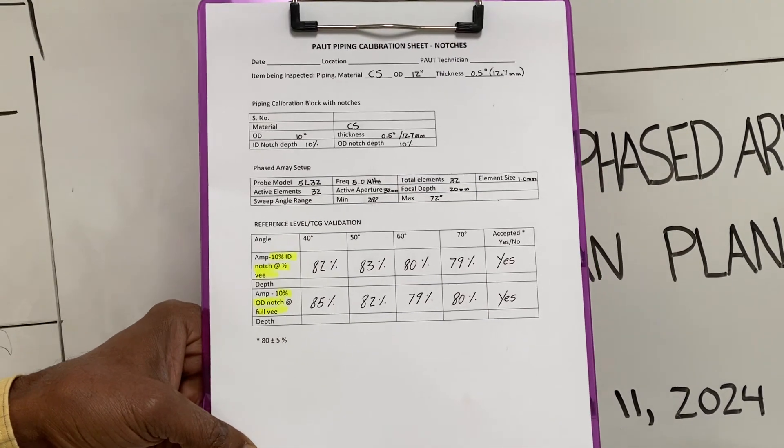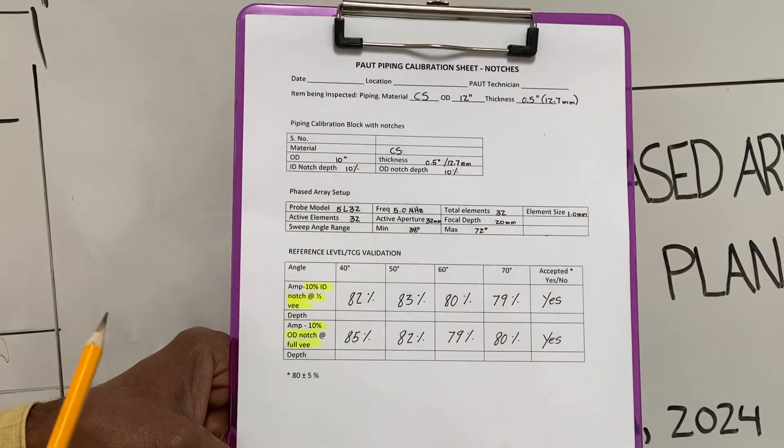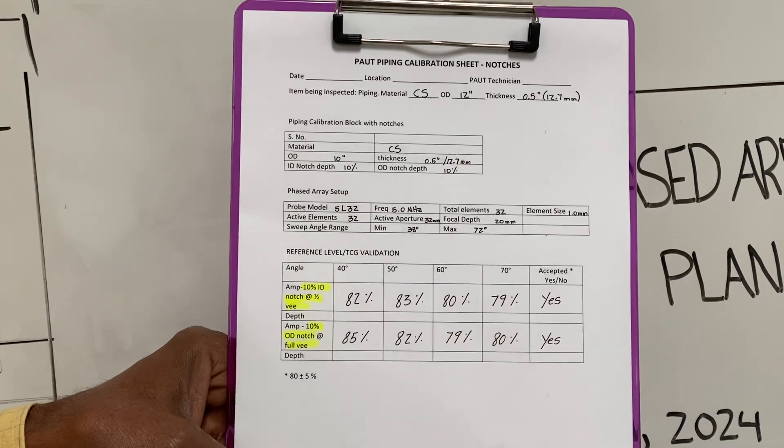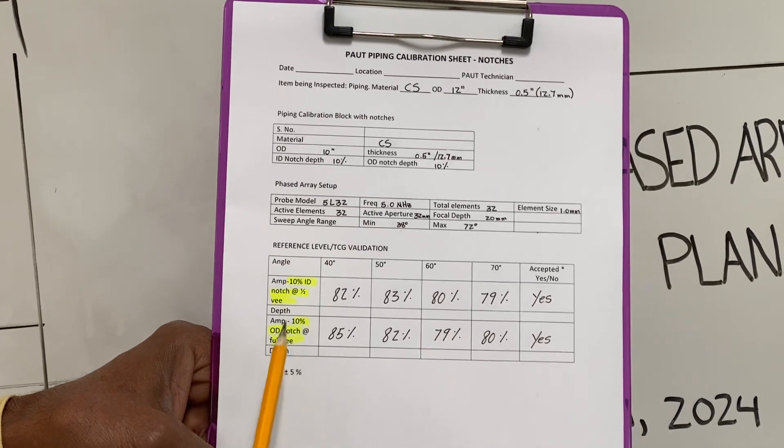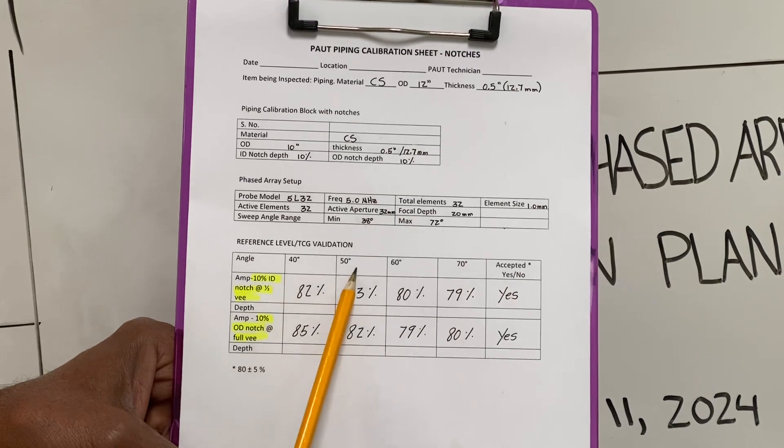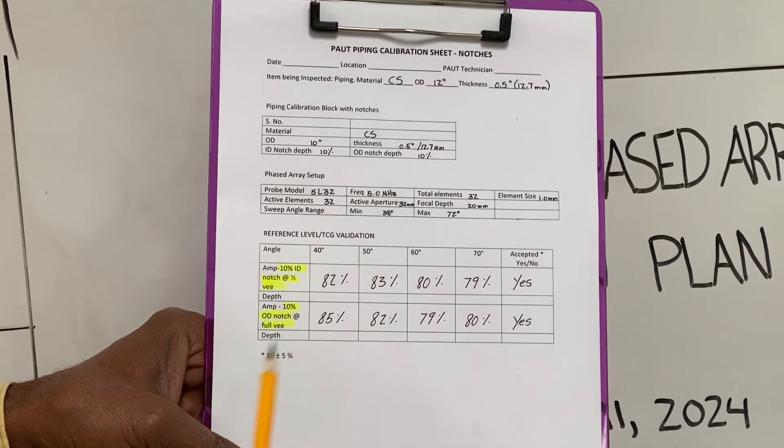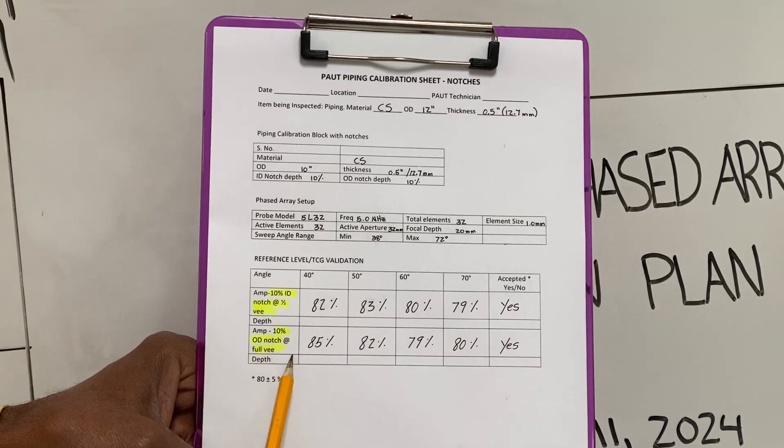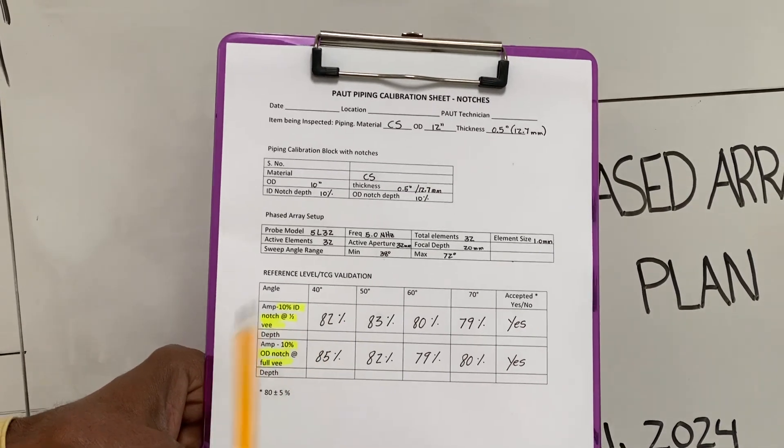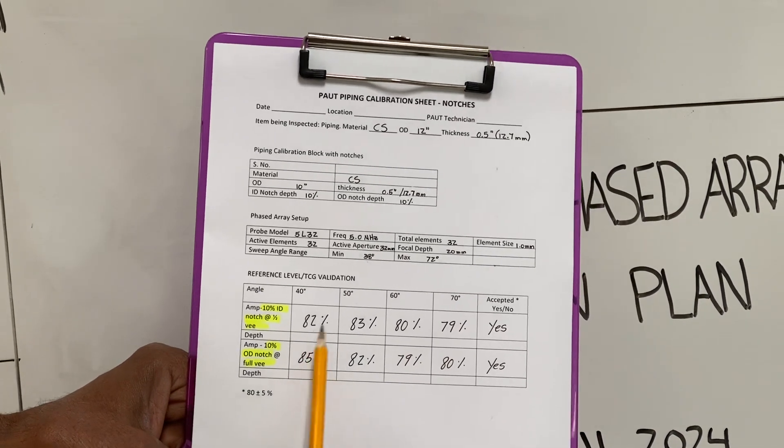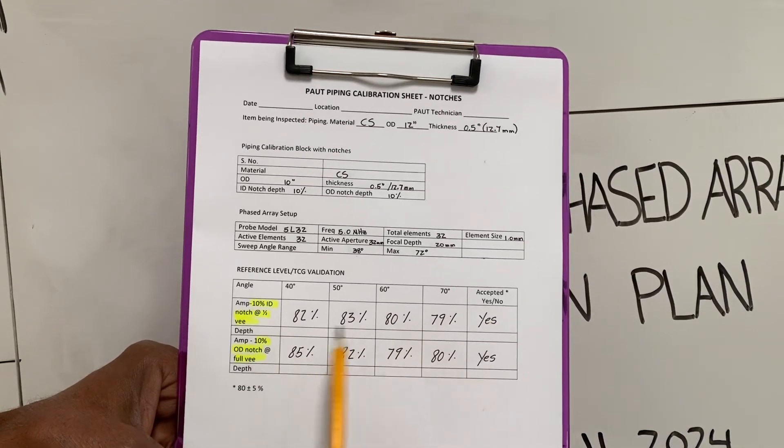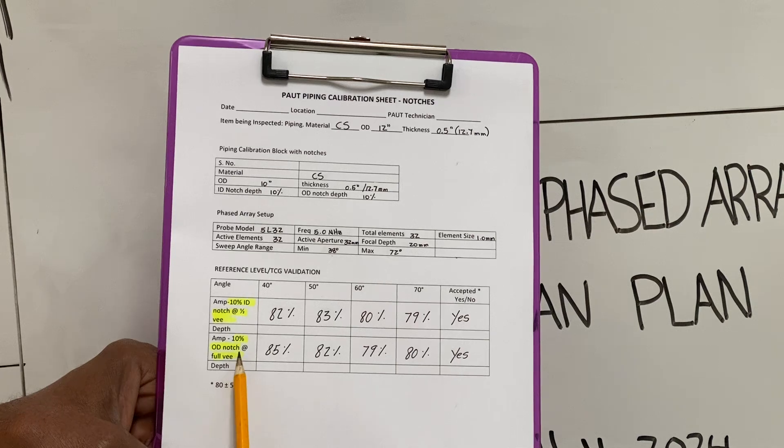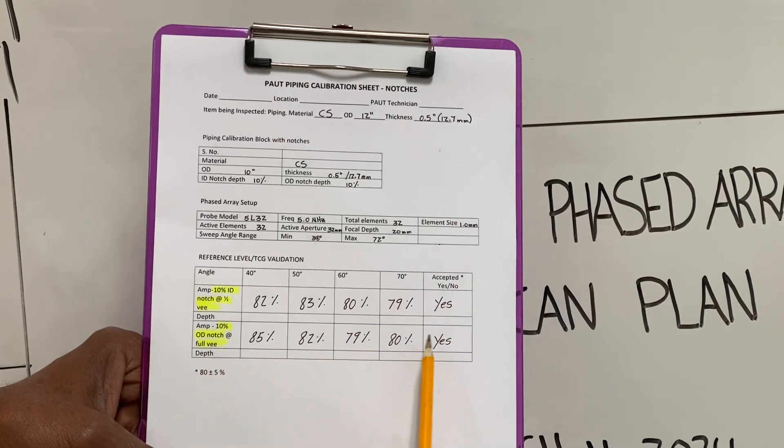In order to make sure that your calibration is valid, what needs to be done like I discussed in the last lecture of February 24th is that you have to take the measurements at 40 degrees, 50, 60, and 70 to make sure that you're getting an amplitude on the ID notches and the OD notch which is about 80%. So here we have 82, 83, 80, and 79. So this is an acceptable calibration on the OD notch, full V path, and this is also acceptable.